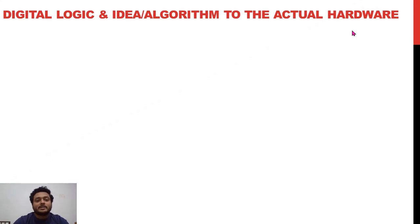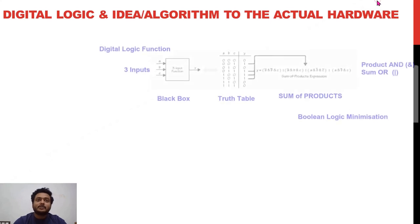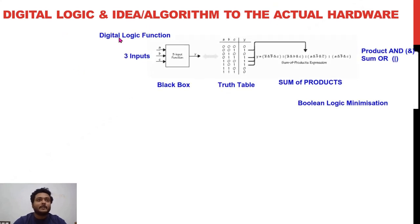Let us think about what actually goes into an IC when you go for designing something. You start with some specifications and you need inputs and outputs. Take a simple example: we have a digital logic function with three input variables and one output — a black box. Using the specifications, you can derive what happens inside the circuit and derive a truth table from it.